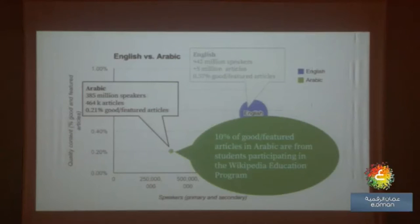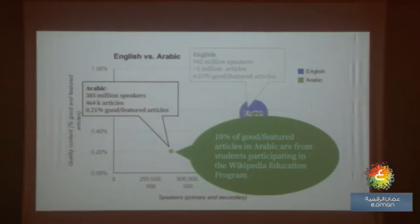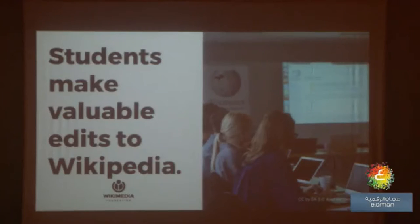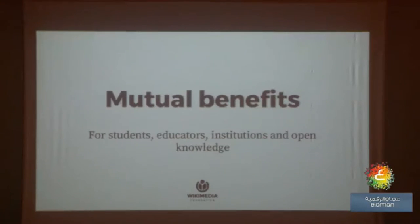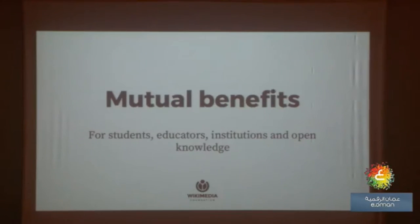Student work is valuable and has a mutual benefit. Students are producing good content — some of the best content on Arabic Wikipedia comes from students in Egypt, Jordan, Saudi Arabia, and Tunisia. Students make valuable contributions to Wikipedia and we can find a mutual benefit there. We can also talk about benefits to educators, professors, institutions who sponsor this type of work, and to open knowledge and being a good global citizen.